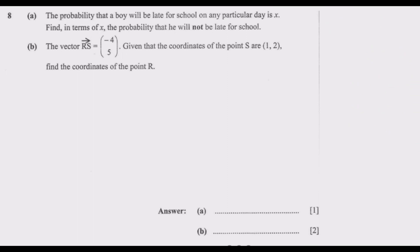Now let us look at question 8. Part (a): the probability that a boy will be late for school on any particular day is x. Find, in terms of x, the probability that he will not be late for school. The question requires us to find, in terms of x, the probability that the boy will not be late.